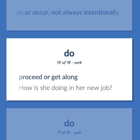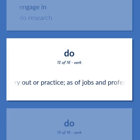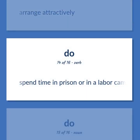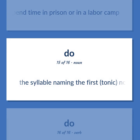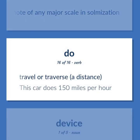Proceed or get along. How is she doing in her new job? Engage in. Do research. Carry out or practice, as of jobs and professions. Arrange attractively. Spend time in prison or in a labor camp. The syllable naming the first tonic note of any major scale in solfization. Travel or traverse a distance. This car does 150 miles per hour.